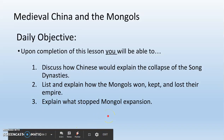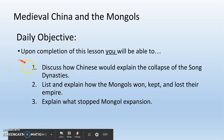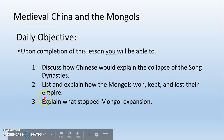Today we're going to learn about medieval China and the Mongols. We have three daily objectives. Number one, discuss how Chinese would explain the collapse of the Song Dynasty. Number two, list and explain how the Mongols won, kept, and lost their empire. And number three, explain what stopped Mongol expansion.